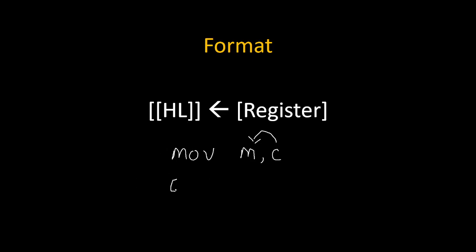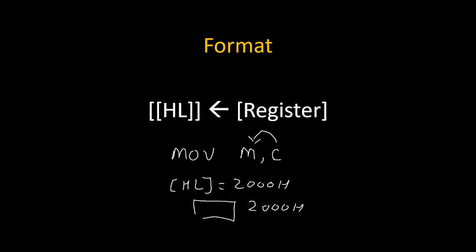Let's say content of HL register pair is 2000H. So this 2000H is the memory location. Now on 2000H, whatever value is there inside the memory, that value will get replaced by the value of C. So if C is holding 55H, then this 55H will get copied inside the memory, means on location 2000H. So this is the job of this instruction — it will simply copy the content of the given register to memory, which is the content of content of HL.